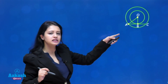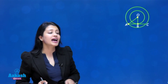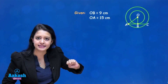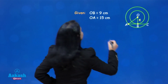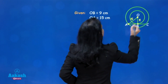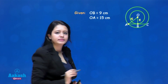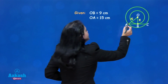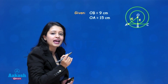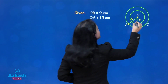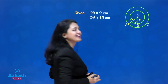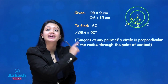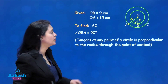We have to figure out the length of AC. The smaller circle's radius OB is 9 centimeters, and the larger circle's radius OA is 15 centimeters. Let us first figure out the length of AB. AB is a tangent to the smaller circle, and we know that the radius is perpendicular to the tangent at the point of contact. This means angle OBA equals 90 degrees. So in triangle OAB, we apply Pythagoras theorem: OA² = AB² + OB².